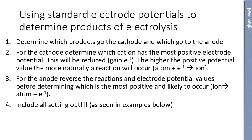We can use standard electrode potentials to determine products of electrolysis in four simple steps. First, determine which species go to the cathode and which to the anode. At the cathode, determine which cation has the most positive electrode potential — that one will be reduced, gaining electrons. The higher the positive potential value, the more naturally the reaction will occur. For the anode, reverse the reactions — most positive after reversal will be oxidized.